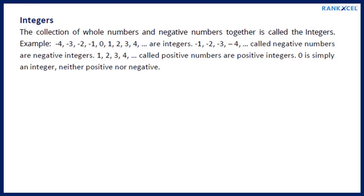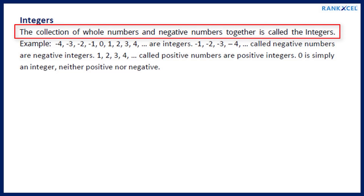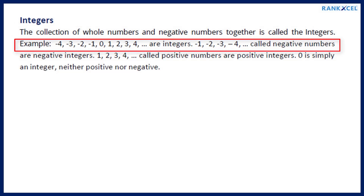Integers: The collection of whole numbers and negative numbers together is called integers. Example: minus 4, minus 3, minus 2, minus 1, 0, 1, 2, 3, 4 are integers.